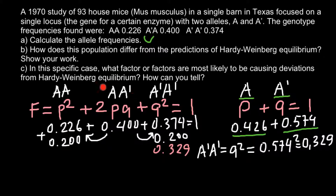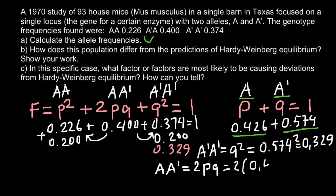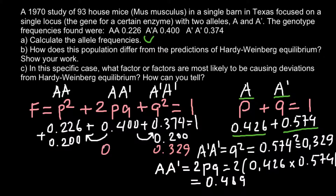Next, we find the predicted frequency of the heterozygous genotype AA', which equals 2PQ. We know P = 0.426 and Q = 0.574. Two multiplied by 0.426 multiplied by 0.574 gives a predicted frequency of 0.489. The observed frequency of the heterozygous genotype is 0.4, so we have a deviation here.